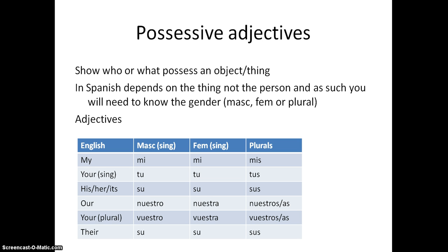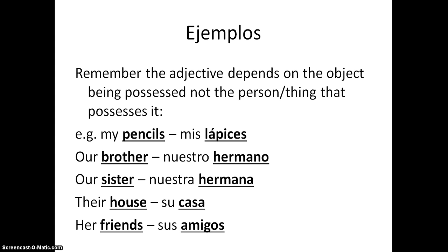You'd understand it by context more than anything else. So, some examples. Remember, the adjective changes depending on what the noun is. My example is 'my pencils' — I'm not plural, but pencils are, so we'd use the plural form of 'my', which is mis: mis lápices.